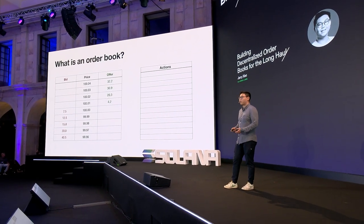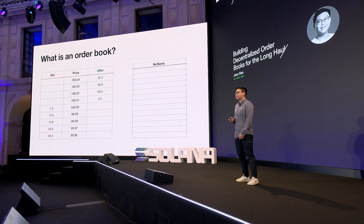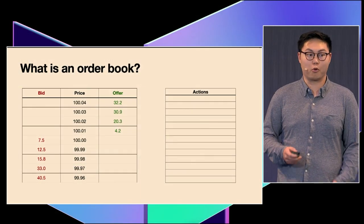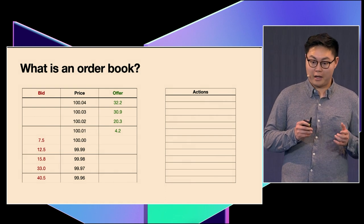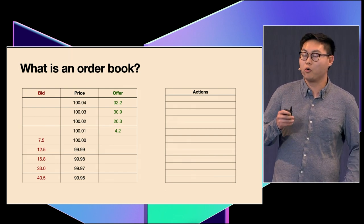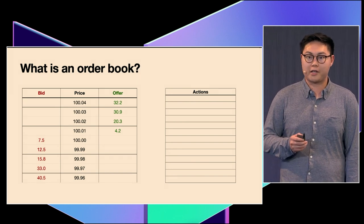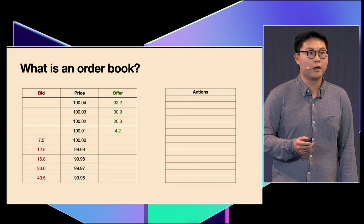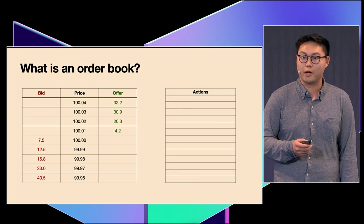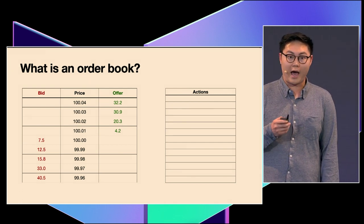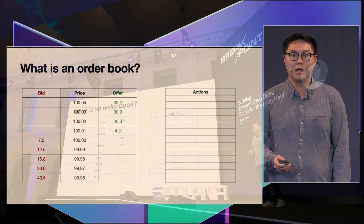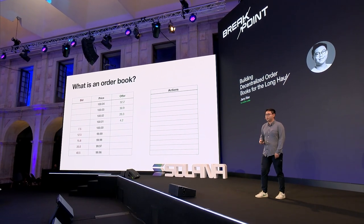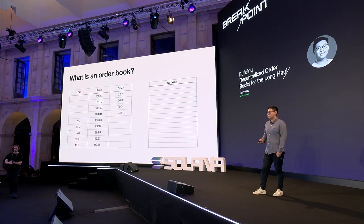First, we need to talk about what an order book is. An order book is simply a mechanism for some exchange to manage the state of certain orders. Orders are basically a way to determine who the buyers and sellers are in a market. An order has a couple of parameters: the side the order is on, whether it's a buy order or a sell order. If you took all the buy orders and sorted them from highest price to lowest price, by least recent to most recent, you would get the bids.